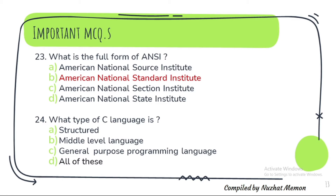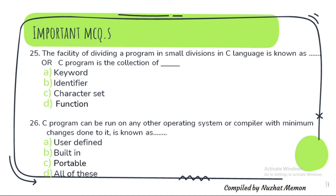Question 24: What type of language is C? It is a structured, middle-level language and general purpose programming language. Question 25: The facility of dividing a program into small divisions in C language — or it can be asked as: a C program is the collection of functions. Question 26: A C program can run on any other operating system or compiler with minimum changes — it is known as portable.